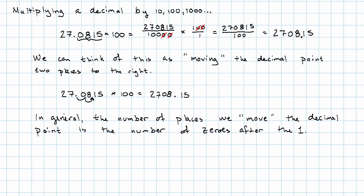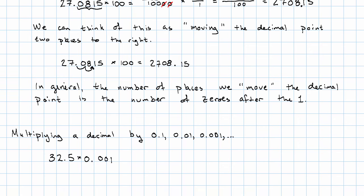What about that other kind of power of 10? Let's say we wanted to multiply by 0.1, 0.01, 0.001, or one of those. Let's say we wanted to multiply 32.5 times 0.001. That's 325 over 10 in the denominator, multiplied by 1 over 1000 — three digits after the decimal point means three zeros in the denominator. The numerator is 325, and the denominator is 1 followed by 4 zeros. I want 4 digits after the decimal point, so I need to fill in an extra zero, and I get 0.0325.